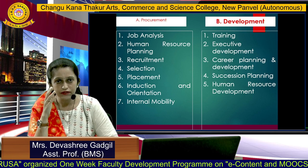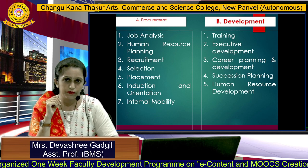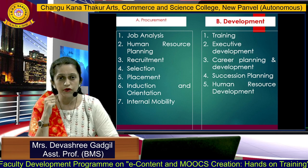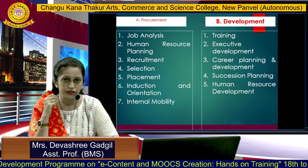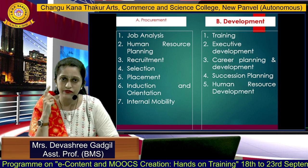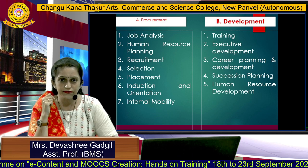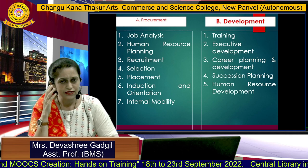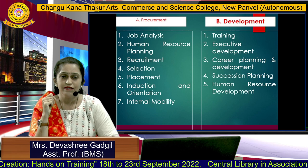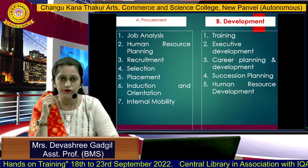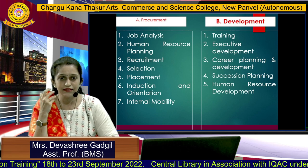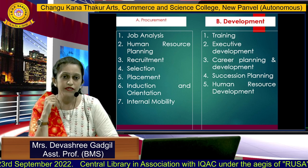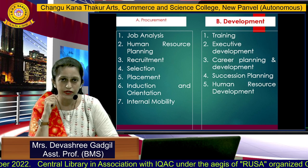Under the development heading: training — it is necessary to improve the skills of employees working in the organization — second is executive development, third is career planning and development, fourth is succession planning, which is another important function of HRM. Last is human resource development, because development is necessary for improving the effectiveness of human resource employees in the organization.